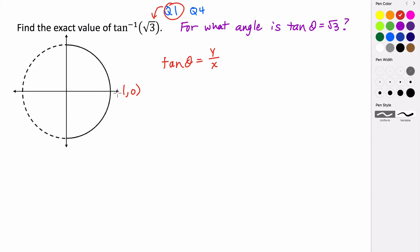we have 1, 0. We have 0, 1 up here. At π/6, it's √3/2, 1/2. At π/4, it's √2/2, √2/2. And then at π/3, it's 1/2, √3/2.